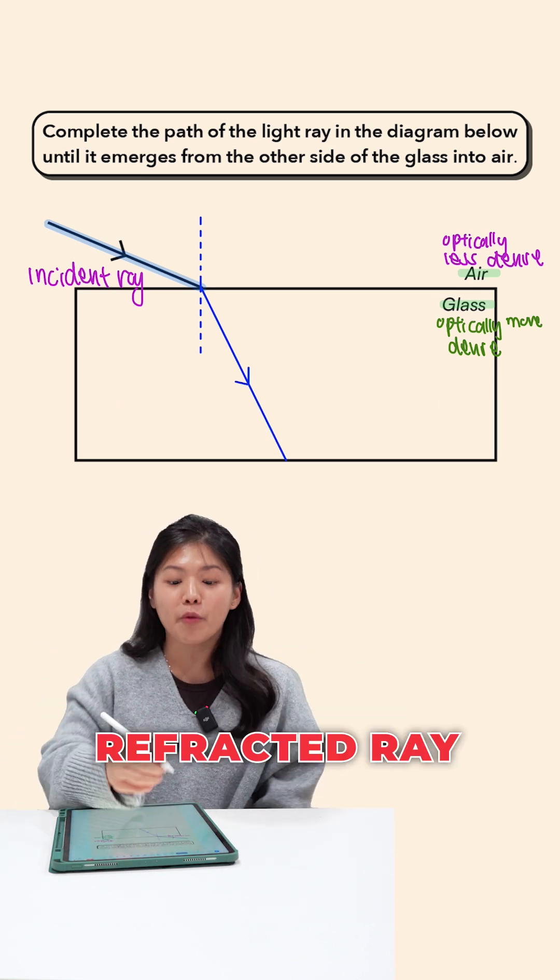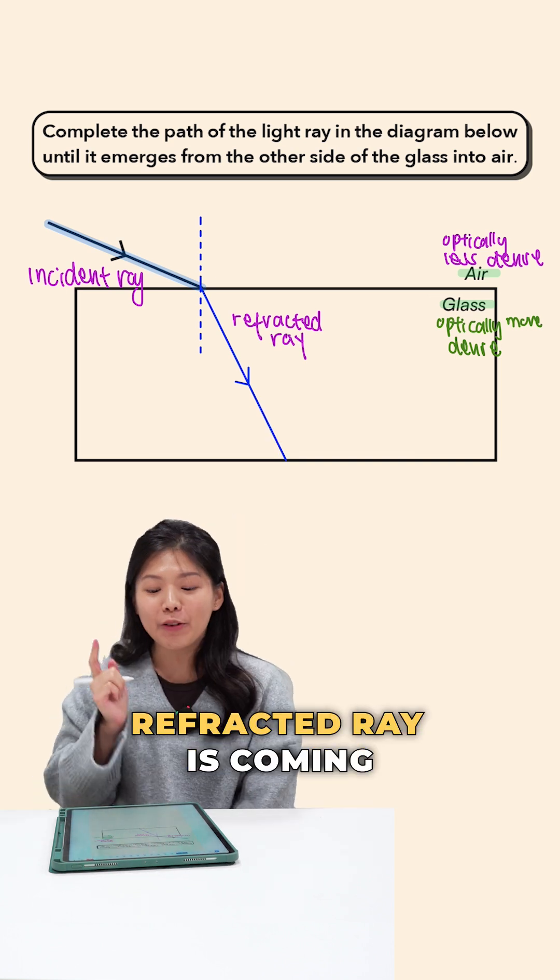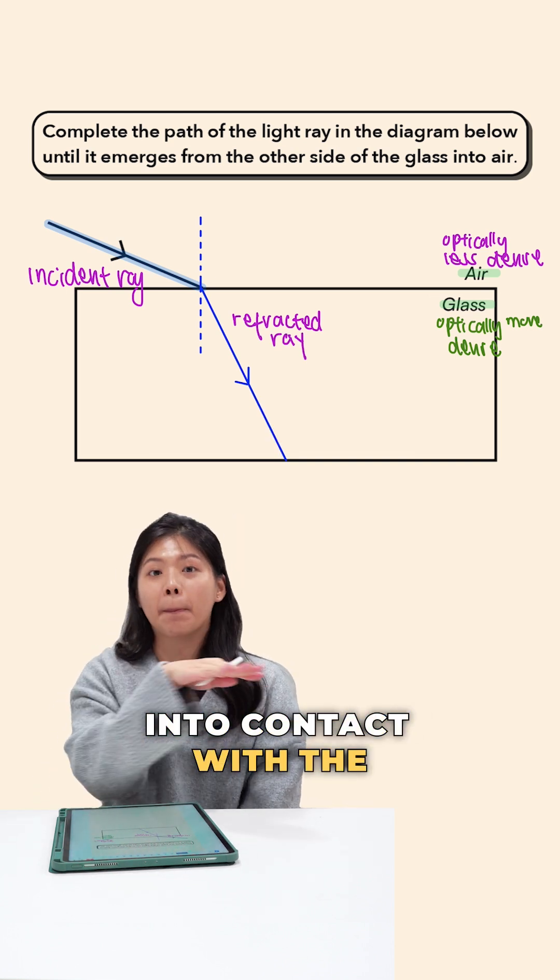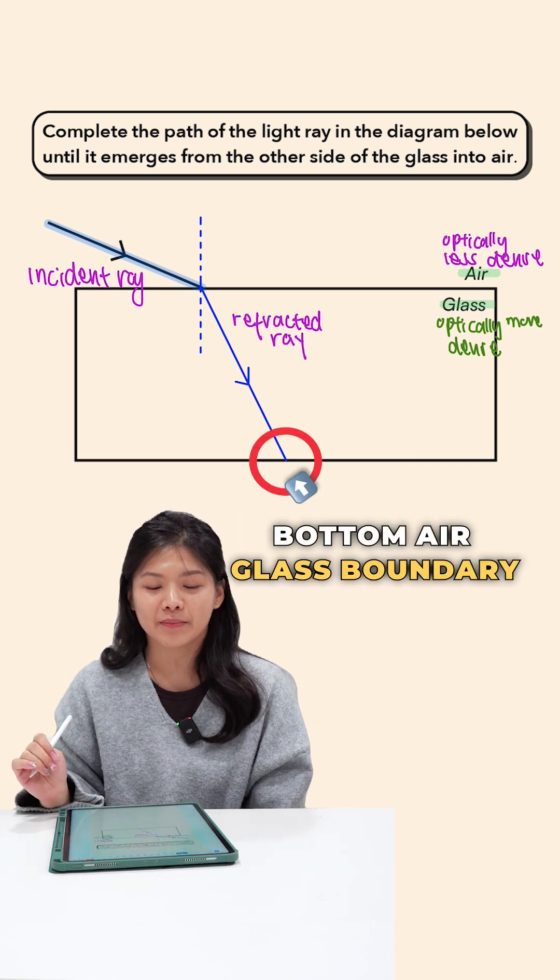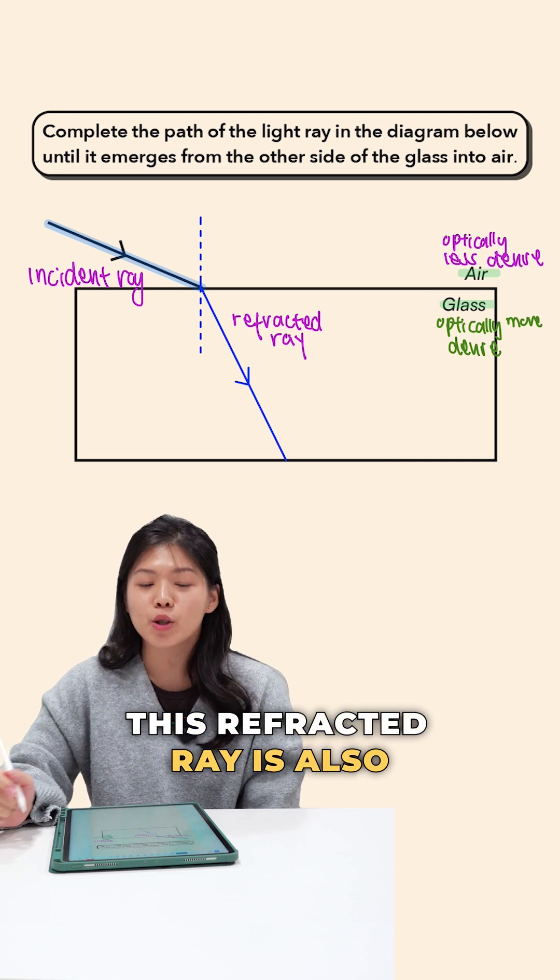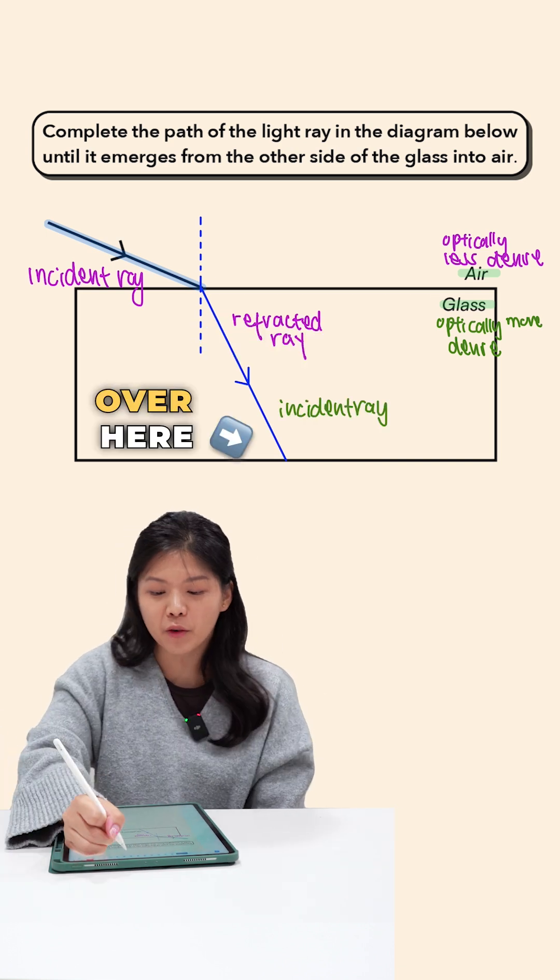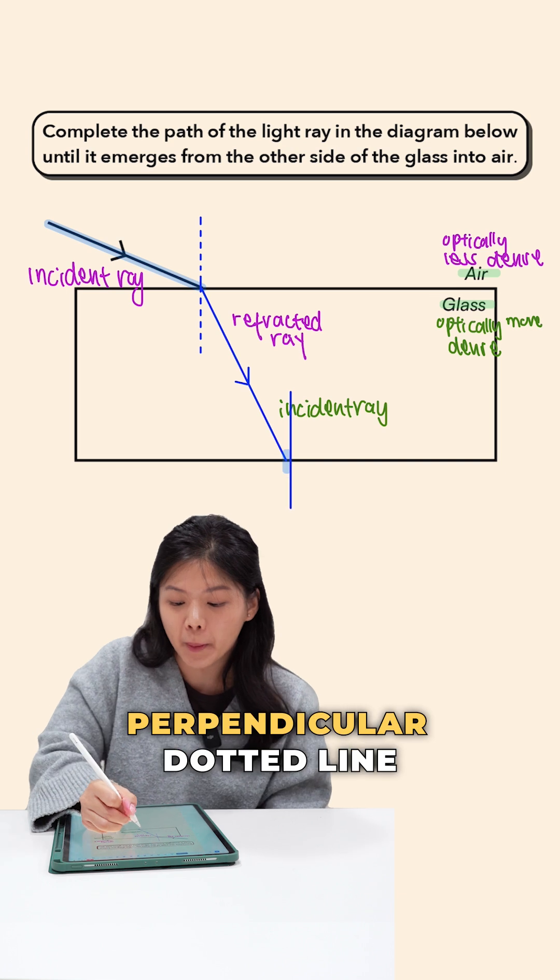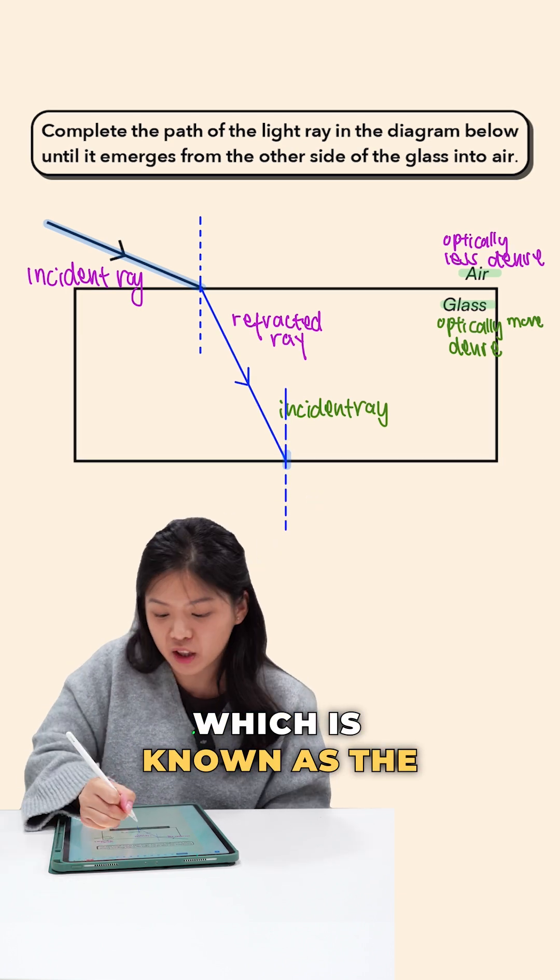Because this light ray has bent, we call it the refracted ray. Now, you see that our refracted ray is coming into contact with the bottom air glass boundary. In other words, this refracted ray is also acting as an incident ray. And at the point of incidence over here, we once again draw our perpendicular dotted line, which is known as the normal.